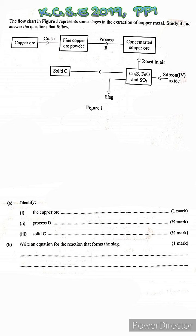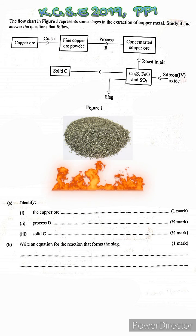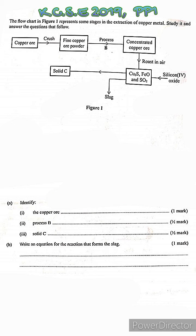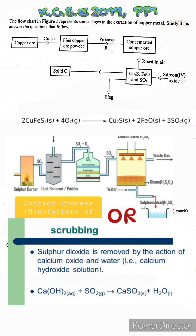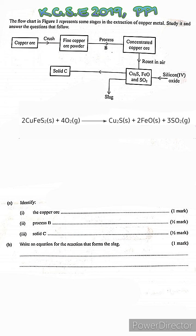After the ore has been concentrated, it is then roasted in air — heated at high temperatures with a supply of air and oxygen. This causes a reaction between the copper pyrites and oxygen, producing the three compounds mentioned. Sulfur dioxide is a gas, so it is easily separated. It is collected and either used for the manufacture of sulfuric acid in the contact process, or scrubbed using calcium hydroxide, since sulfur dioxide cannot be released into the surroundings as it causes acid rain.